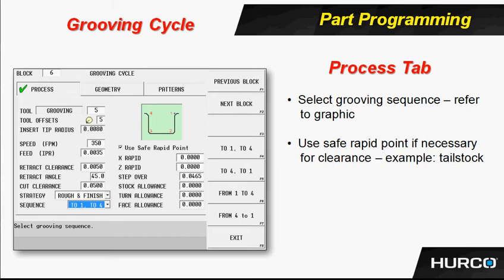The information contained here on the process tab of the grooving screen is really not any different. We just begin to walk through the tooling information, the offset information, speeds, feeds, retract clearances — very similar to what we've seen in some of the other blocks. The strategy covers rough and finish.